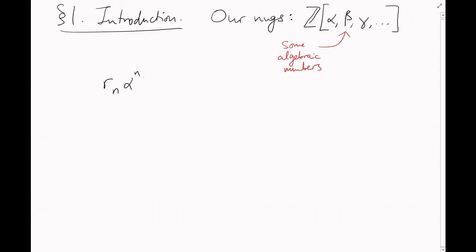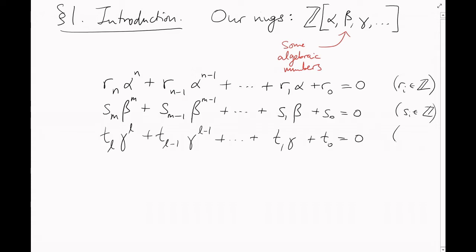Section 1: Introduction. We've been dealing with rings obtained by adjoining some algebraic numbers to Z, that is, Z adjoin a few elements, say alpha, beta, gamma, and so on, where each one satisfies a polynomial equation with integer coefficients.